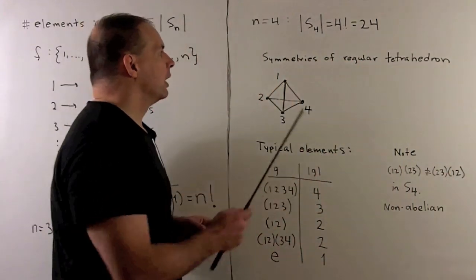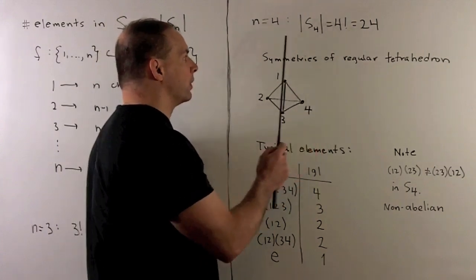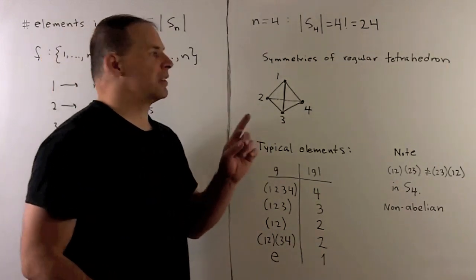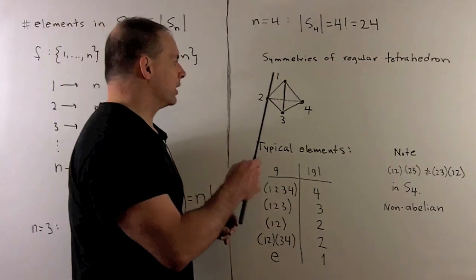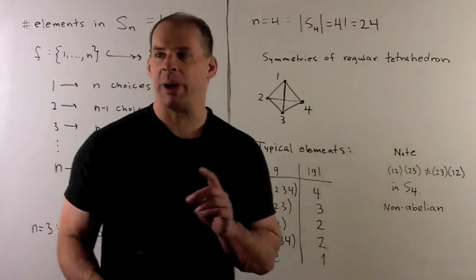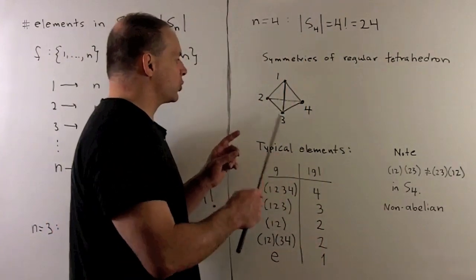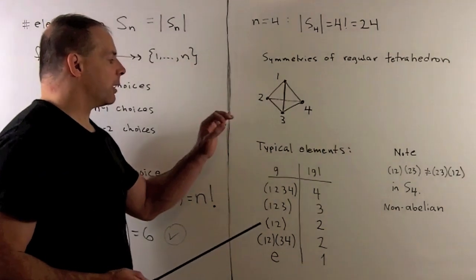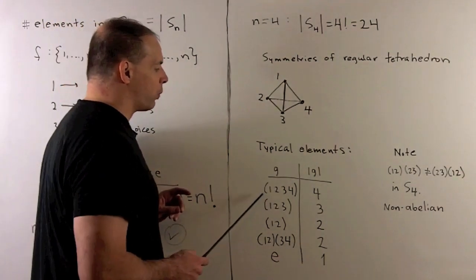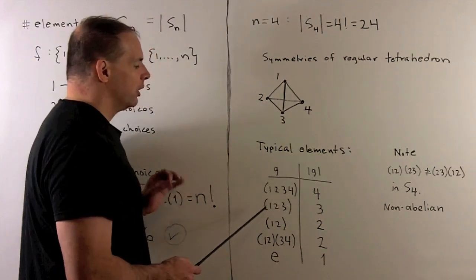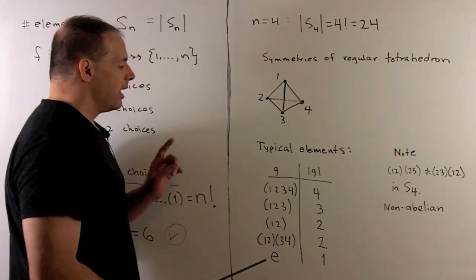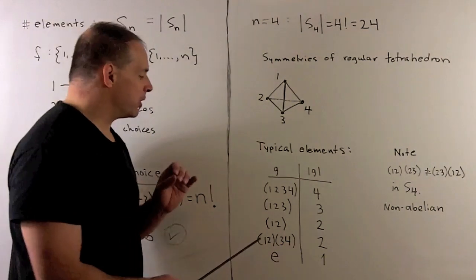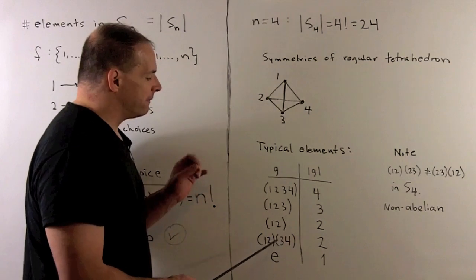If we look at S₄, using 4!, I get 24 for the number of elements. If I want to visualize this, S₄ is just going to be the symmetries of a regular tetrahedron. We can label our vertices 1, 2, 3, 4. Then each of these bijections gives us a symmetry of the tetrahedron, possibly with reflections. Types of elements that can show up in cycle notation: we'll have elements of order 4, elements of order 3, elements of order 2. Then we have these elements of order 2 that are the product of disjoint 2-cycles. Disjoint because they don't share common numbers. Finally, we have the identity element.